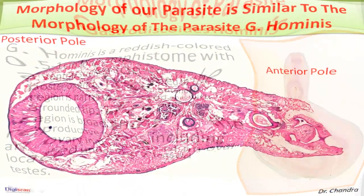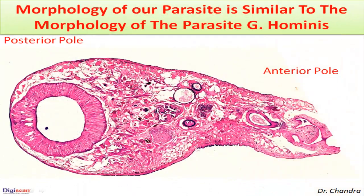Now, coming back to the higher magnification of our parasite, we see that the posterior pole is broad and the anterior pole is narrow, and it has the structures which are seen in Gastrodiscoides hominis.